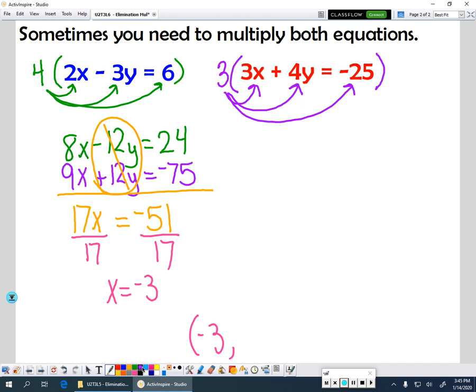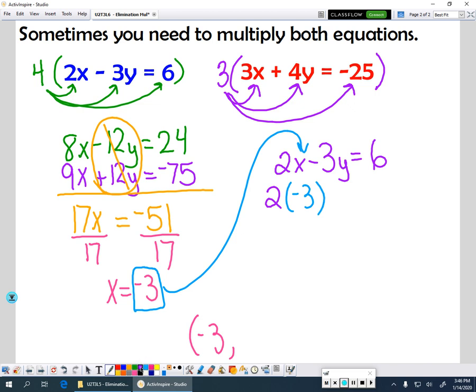Now, I have to go back and find my y value. I can use either equation. I'm going to use the one here on the left. I like it better because there's no negative 25 at the end. And I'm going to take this value of negative 3 for x, and I'm going to plug it back in here for x. So I'm going to have 2 times negative 3. And then the rest of that equation stays the same, minus 3y equals 6.